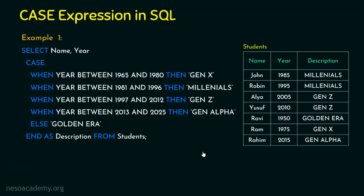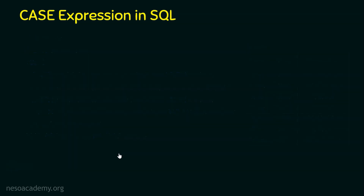Before stepping into example number 2, note that every record is validated line by line. The conditions are checked in order. For data like 1985, once it matches the second condition (Millennials), the remaining conditions and the else part are not evaluated at all. Once a match is found, evaluation stops.